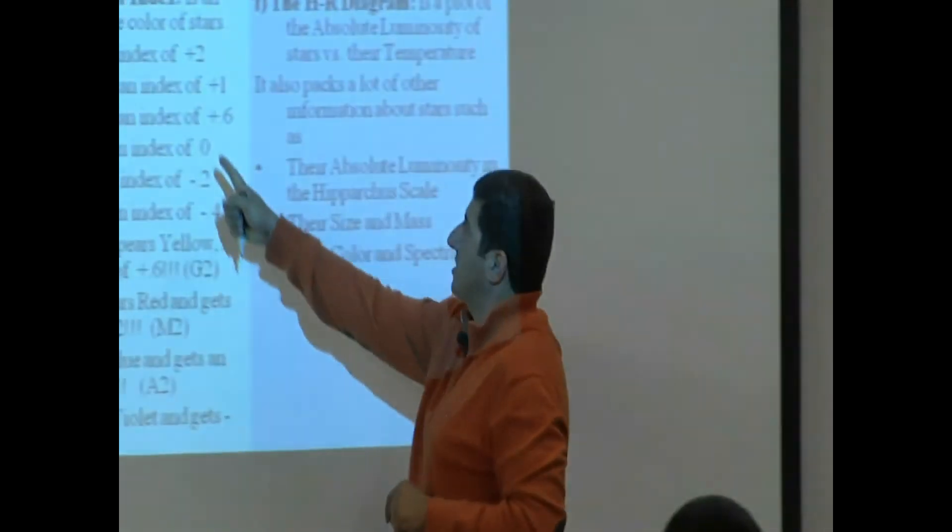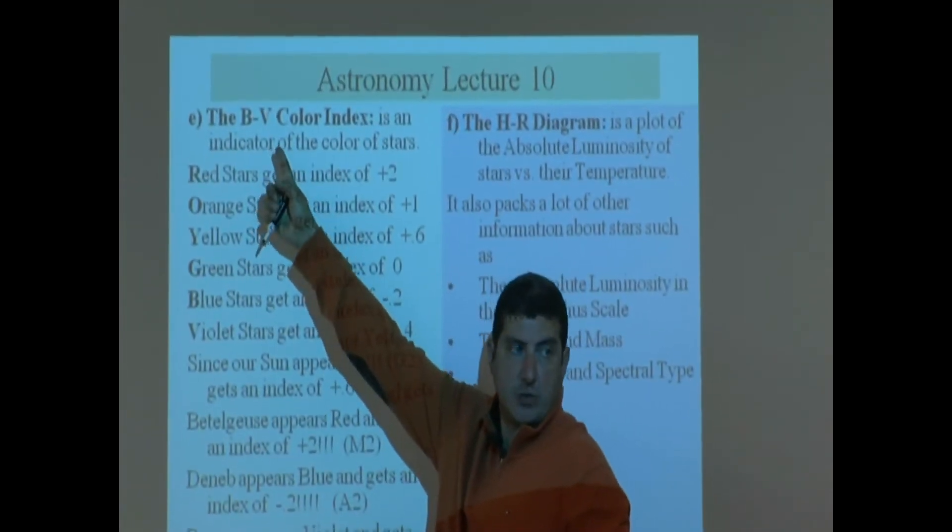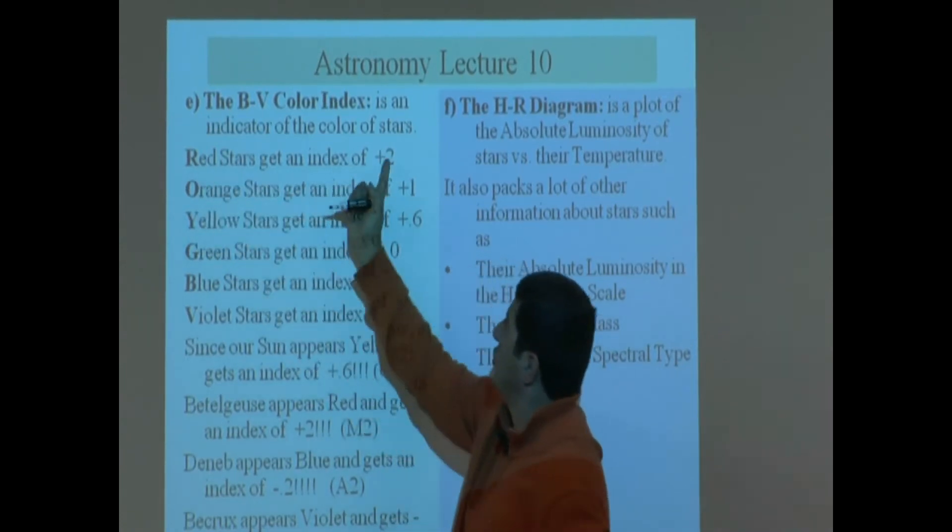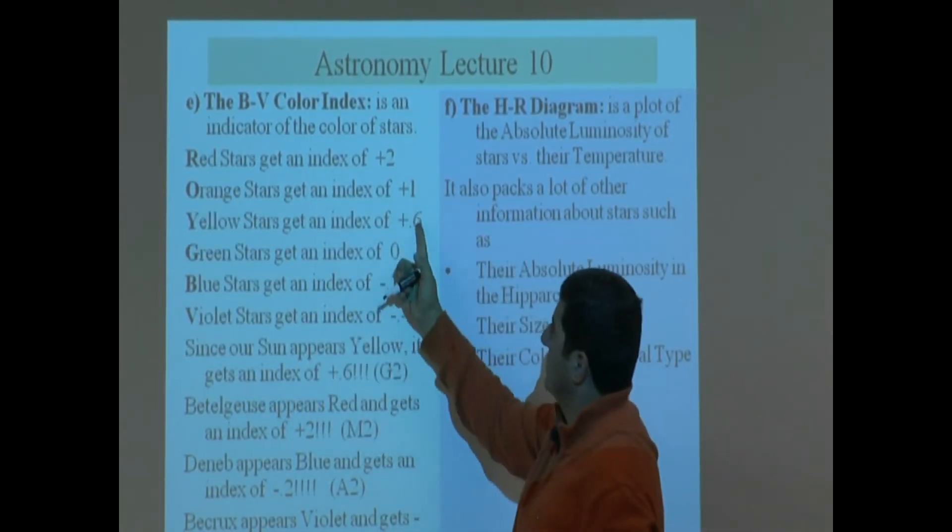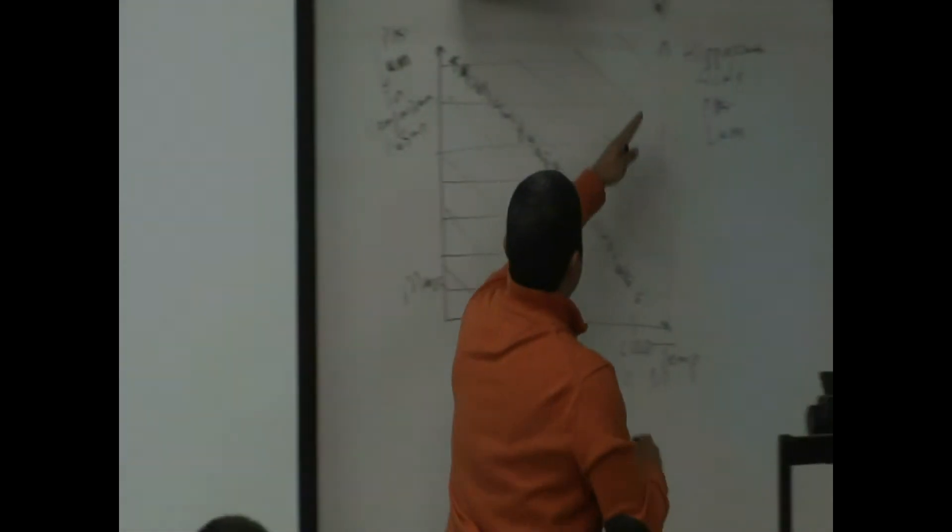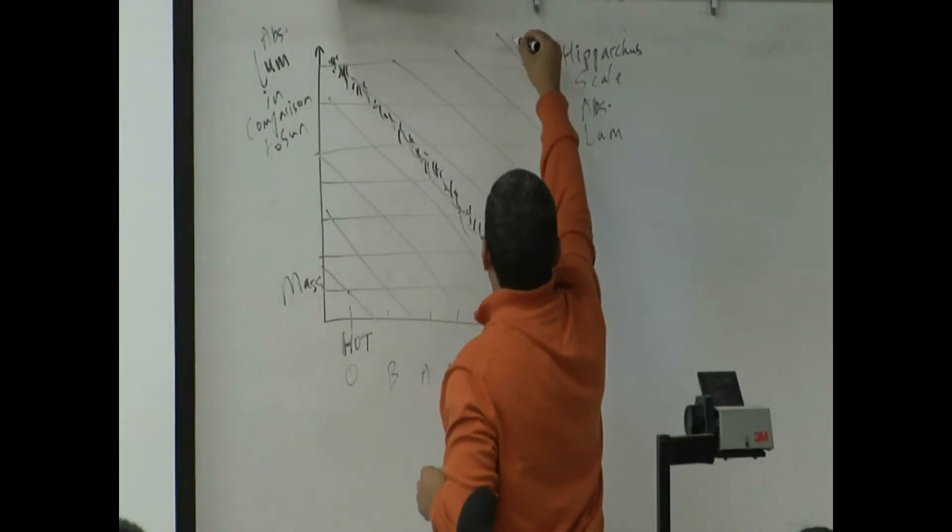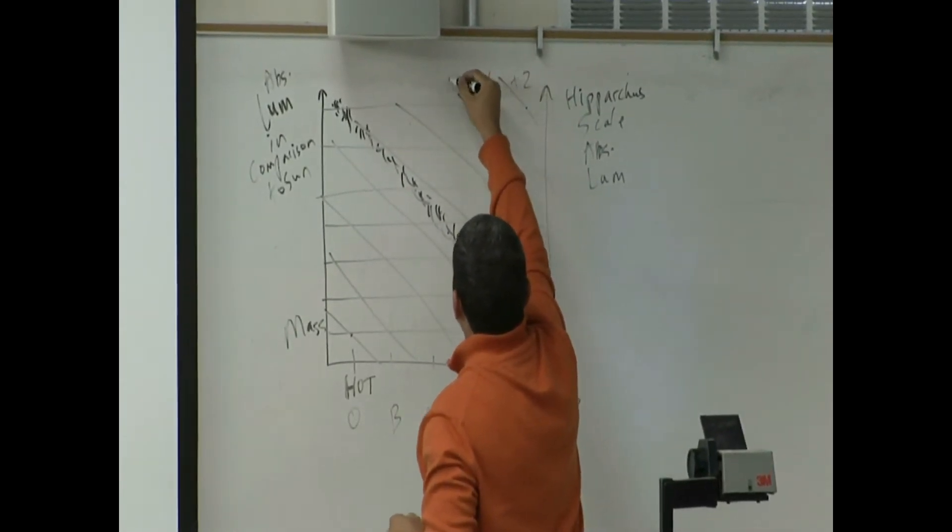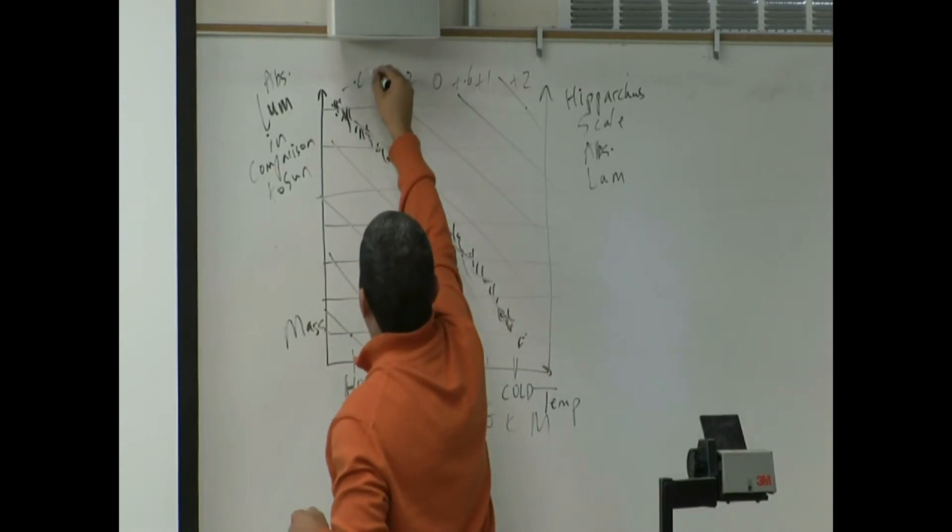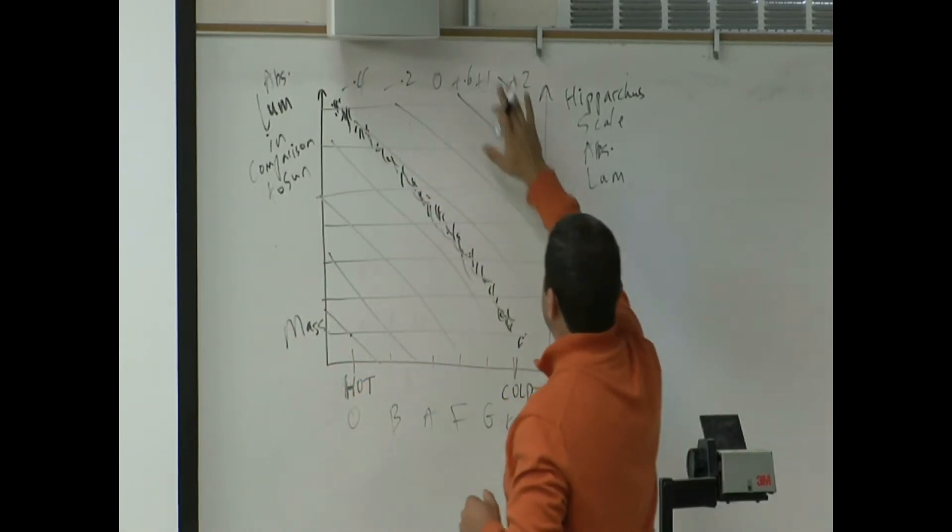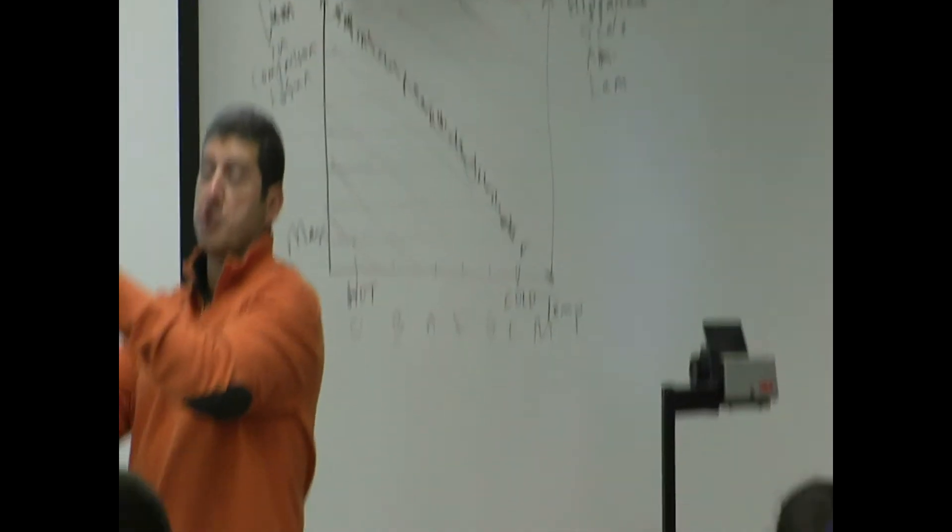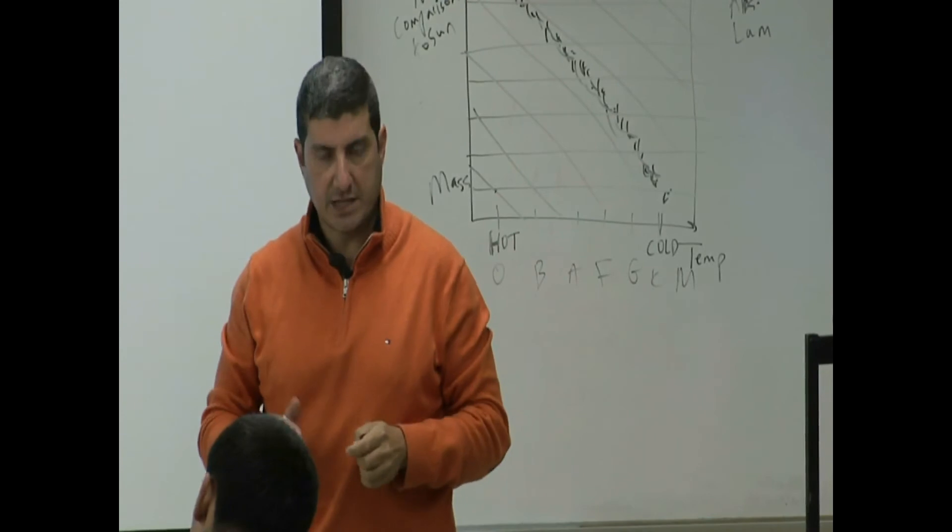And then their color is the BB color index. We learned that the cold stars get an index of two, red, orange is one, yellow, green, blue, violet. So we can put the color code on the top. These are the red stars, plus two, plus one, plus 0.6, zero, negative 0.2, negative 0.4. And then as you go this way, you go through the ROYGBIV, red, orange, yellow, green, indigo, violet.